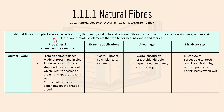Natural fibers from plant sources include cotton and others like coconut. Fibers from animal sources include silk and wool. Fibers are thread-like elements that can be formed into yarns and fabrics.